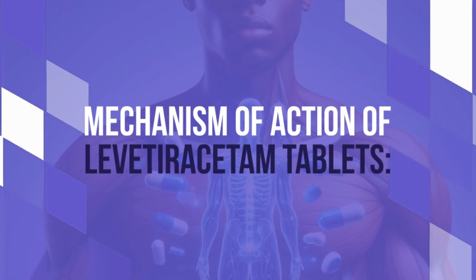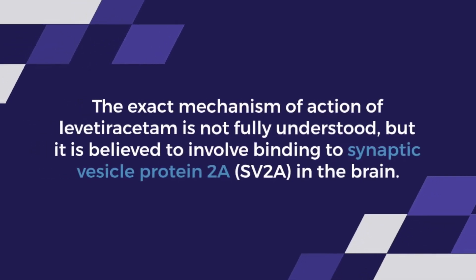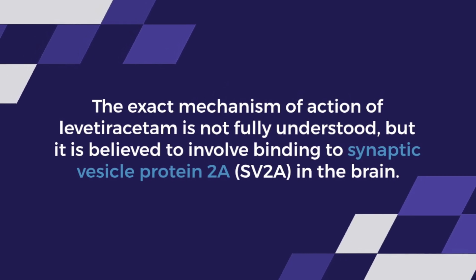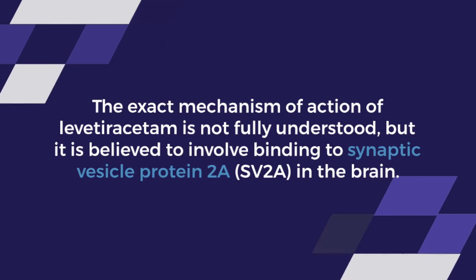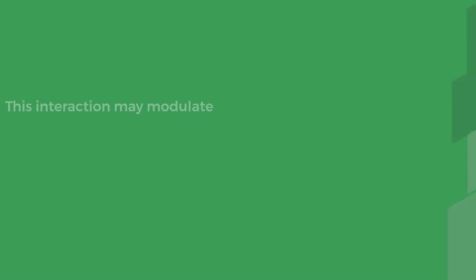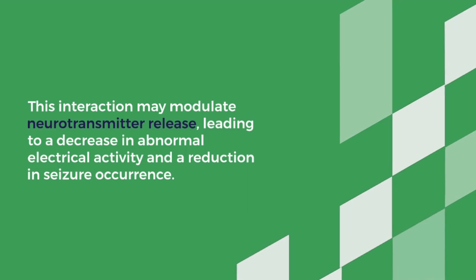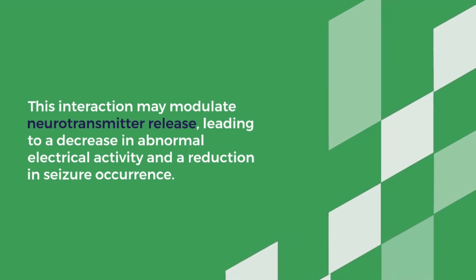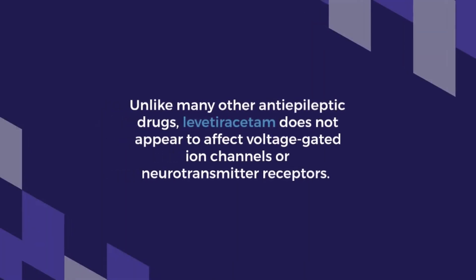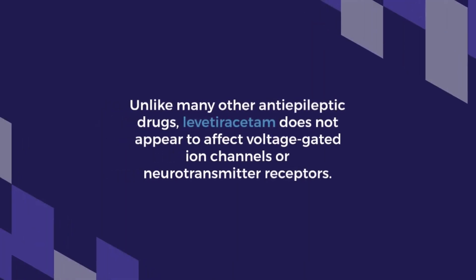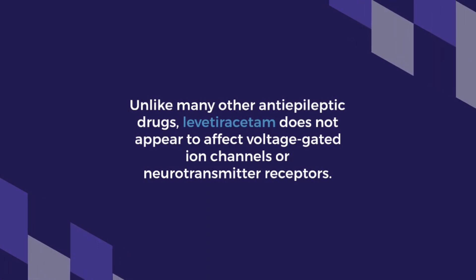Mechanism of action of levatoracetam tablets. The exact mechanism of action of levatoracetam is not fully understood, but it is believed to involve binding to synaptic vesicle protein 2A in the brain. This interaction may modulate neurotransmitter release, leading to a decrease in abnormal electrical activity and a reduction in seizure occurrence. Unlike many other antiepileptic drugs, levatoracetam does not appear to affect voltage-gated ion channels or neurotransmitter receptors.